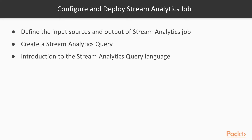To configure and deploy your Stream Analytics job, once provisioned through Visual Studio, go to the Solution Explorer and define the inputs node. Rename input.json to your specific input data sources JSON file, and provide the corresponding input alias, source type, service bus namespace, event hub name, and event hub policy name if you select event hub as your input data source. Then provide the output data source of your Stream Analytics job.